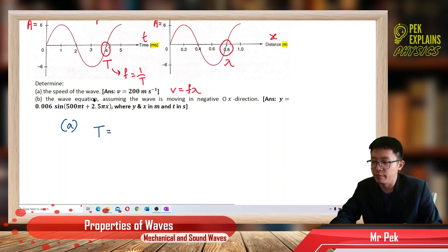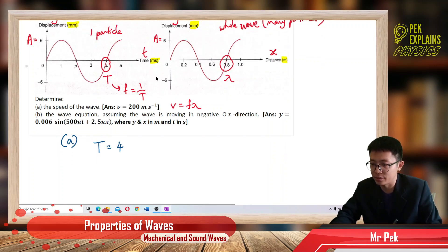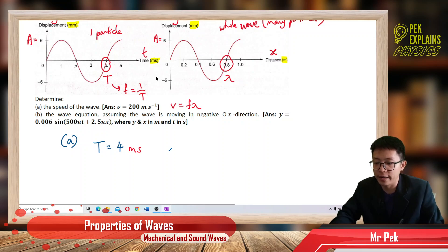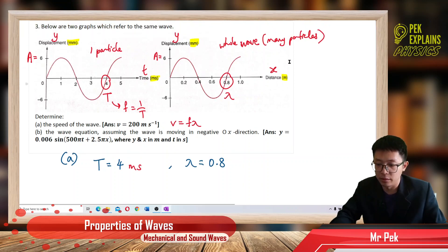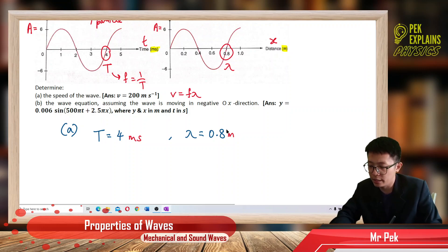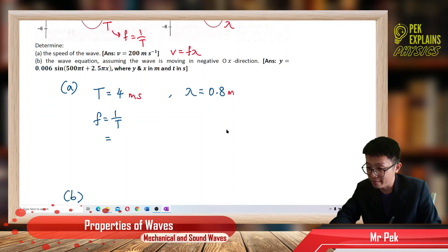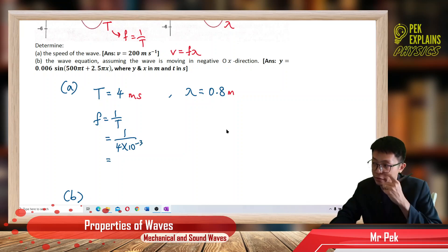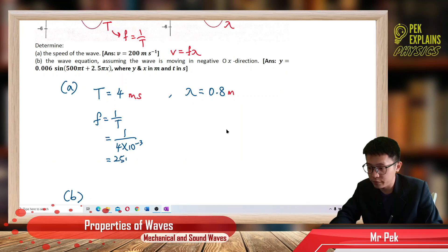My period from the graph is 4 millisecond — the unit is so important. And the wavelength extracted from the graph is 0.8 meter. Now I want to find the frequency. It is 4 millisecond, so I must change to SI unit — milli is exponent negative 3. So the frequency is 250 hertz.